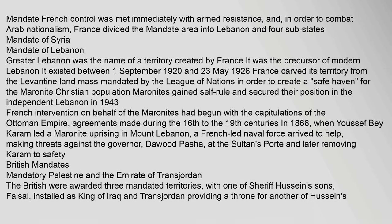French control was met immediately with armed resistance, and in order to combat Arab nationalism, France divided the Mandate area into Lebanon and four sub-states. Greater Lebanon was the name of a territory created by France — it was the precursor of modern Lebanon. It existed between 1 September 1920 and 23 May 1926. France carved its territory from the Levantine land mass mandated by the League of Nations in order to create a safe haven for the Maronite Christian population.